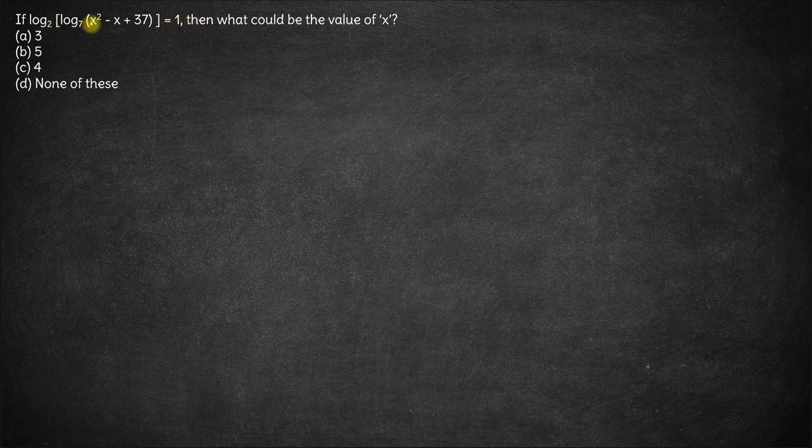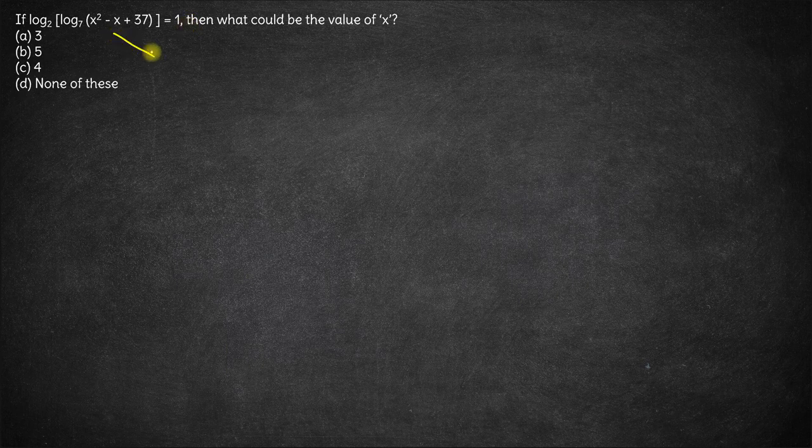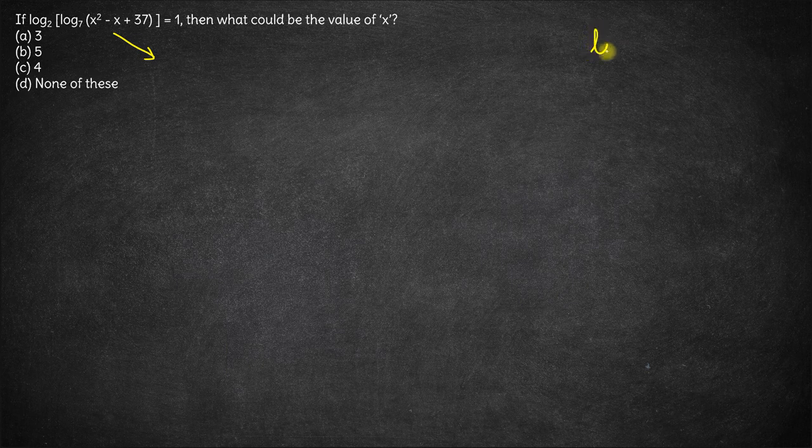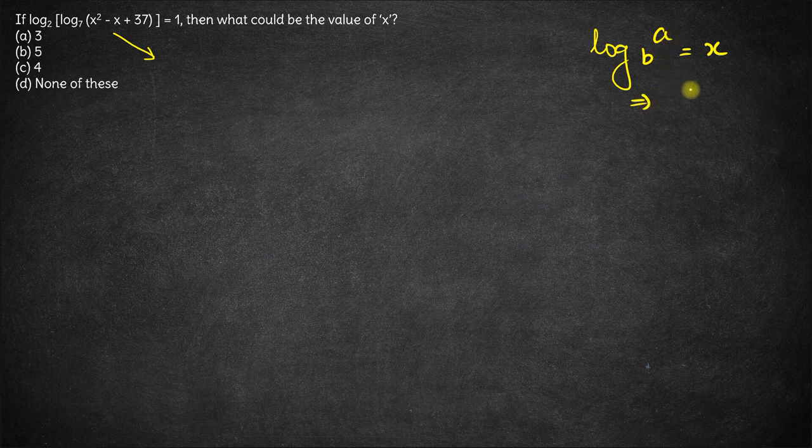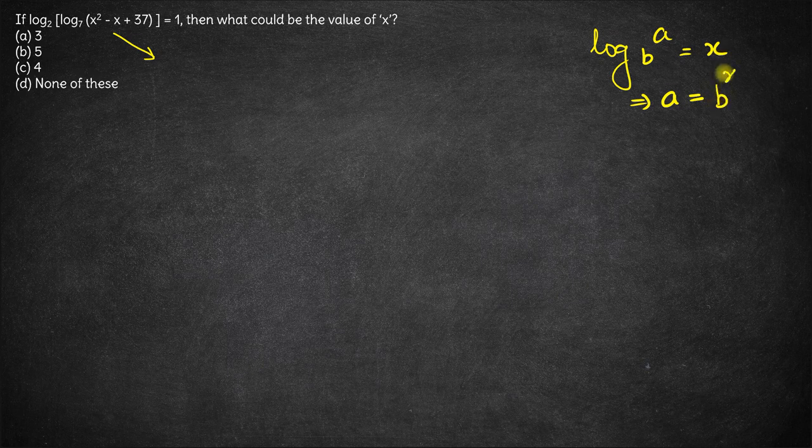We have log of something base 2 is 1. Let's convert this into the exponential equation. If we know that log base b of a equals x, then converting it into exponential equation, we'll have the number a equal to base b to the power x.